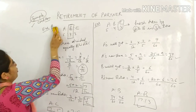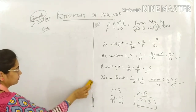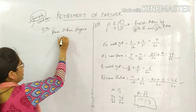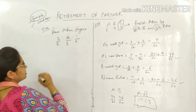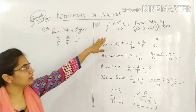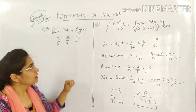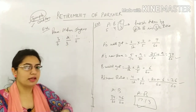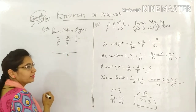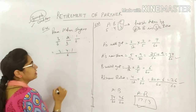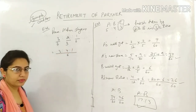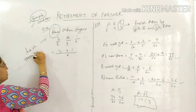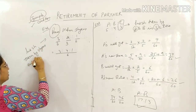Suppose we have three partners: Ram, Mohan, and Shyam, and they have a profit sharing ratio given as fractions. Notice the difference from the previous questions: here the ratios are in fractions, and the denominators are not the same. To make them comparable, denominators should be same, so we find the LCM. Mohan retires, and his share is taken entirely by Shyam.